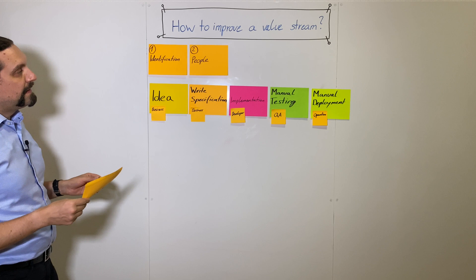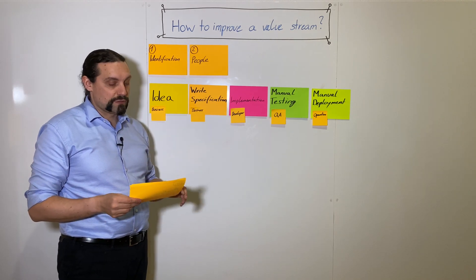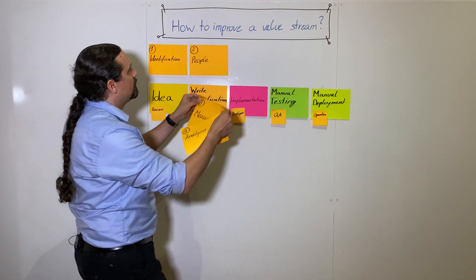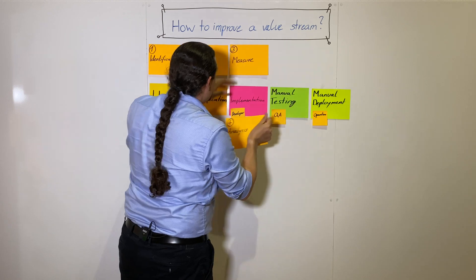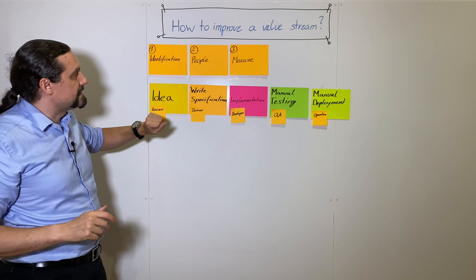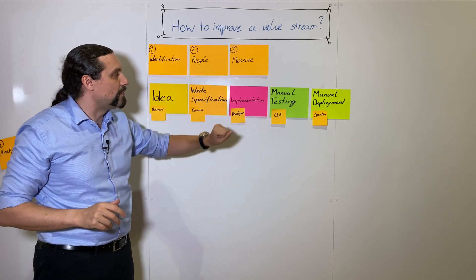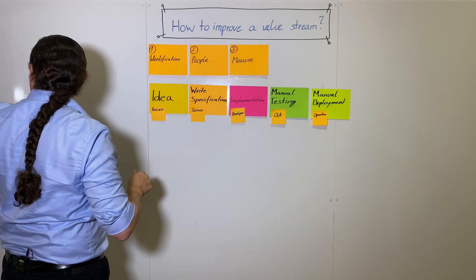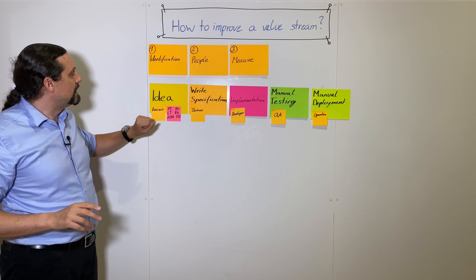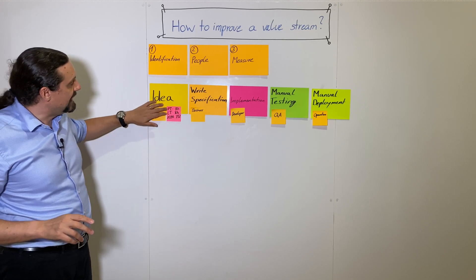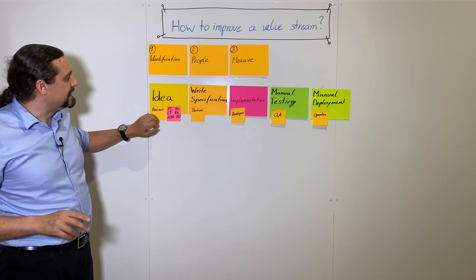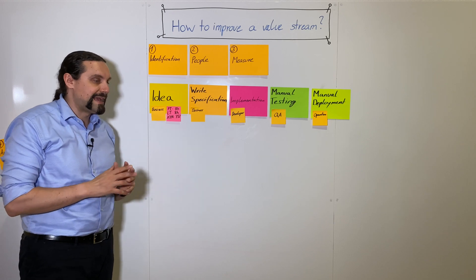When we have done the identification of which people are working in this value stream, we are going to measure. We are going to measure how long it takes for such a value stream to operate. We measure how long it takes to create that idea, and for that we are going to look at the process time, the lead time, and the percentage completed and accurate.